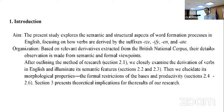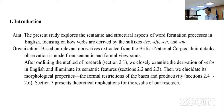Introduction. The present study explores the semantic and structural aspects of word formation processes in English, focusing on how verbs are derived by the suffixes -ize, -ify, -en, and -ate. Based on the relevant derivatives extracted from the British National Corpus, there are detailed observations made from semantic and formal viewpoints. After outlining the research method, we closely examine the derivation of verbs in English and illuminate its semantic features, then elucidate its morphological properties, the formal restrictions of bases, and productivity.